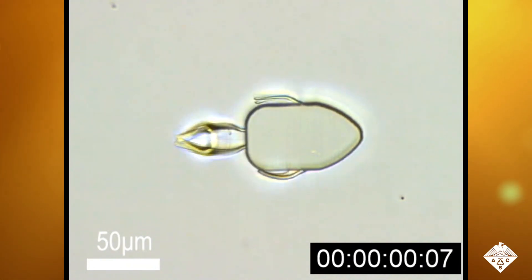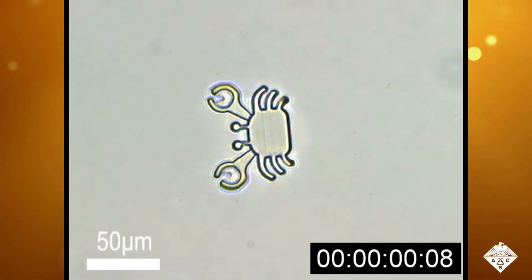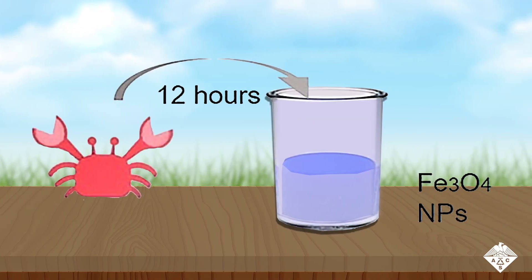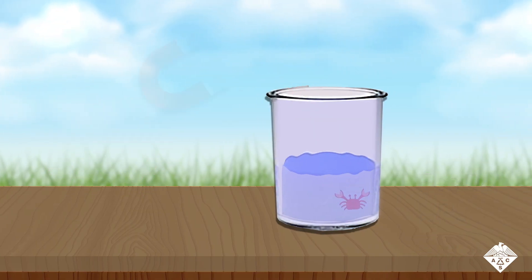They made shape-morphing micro-robots that look like a fish, crab, or butterfly. Then they placed the micro-robots in a suspension of iron oxide nanoparticles to make them magnetic.